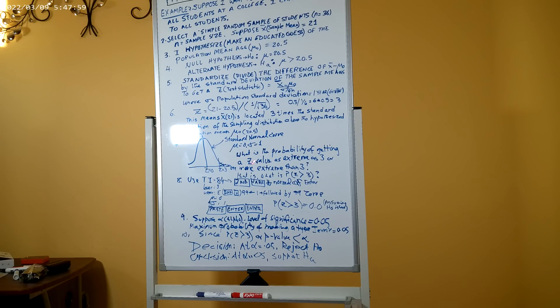So what is the probability of getting a z value, that is the test statistic, as extreme as 3 or more extreme than 3 if the null hypothesis is true? That is what we want to find out.